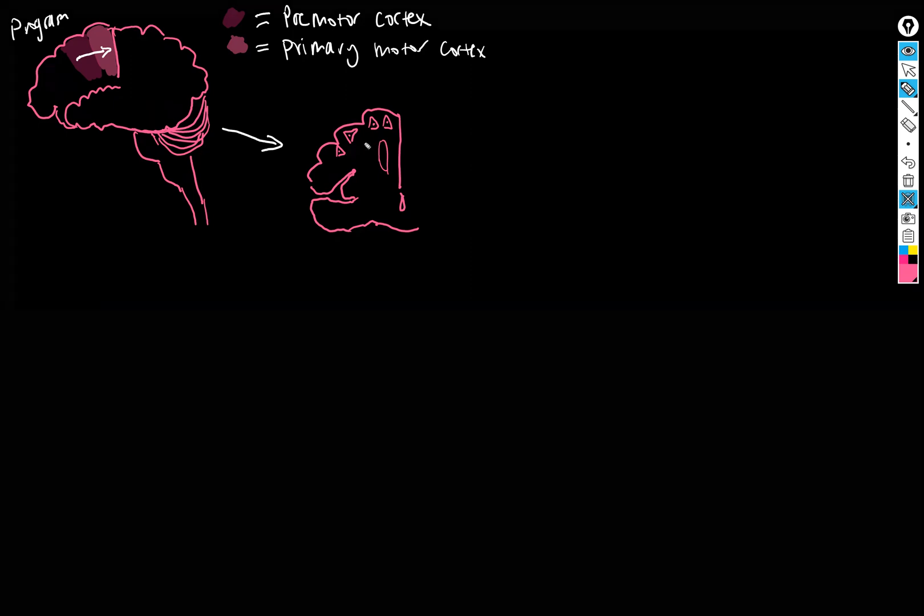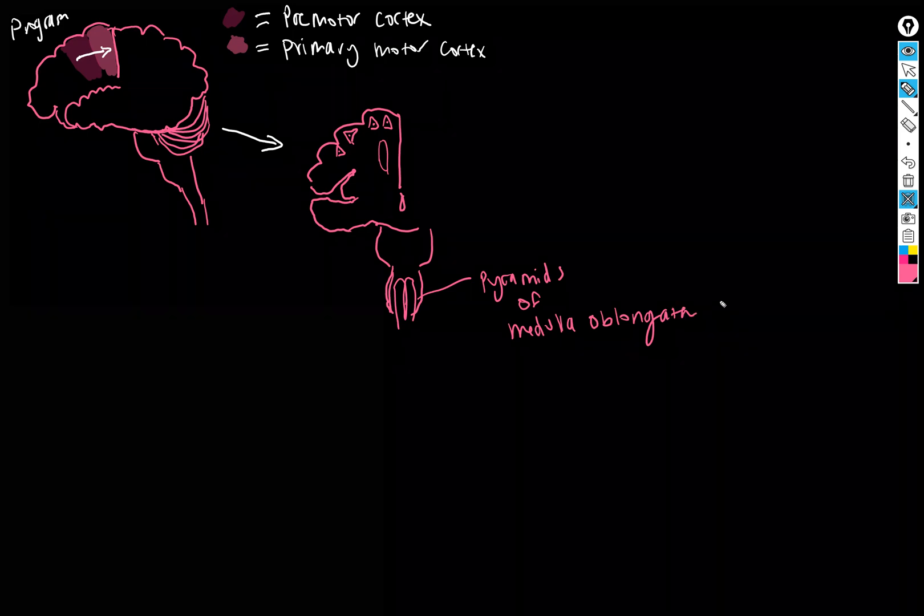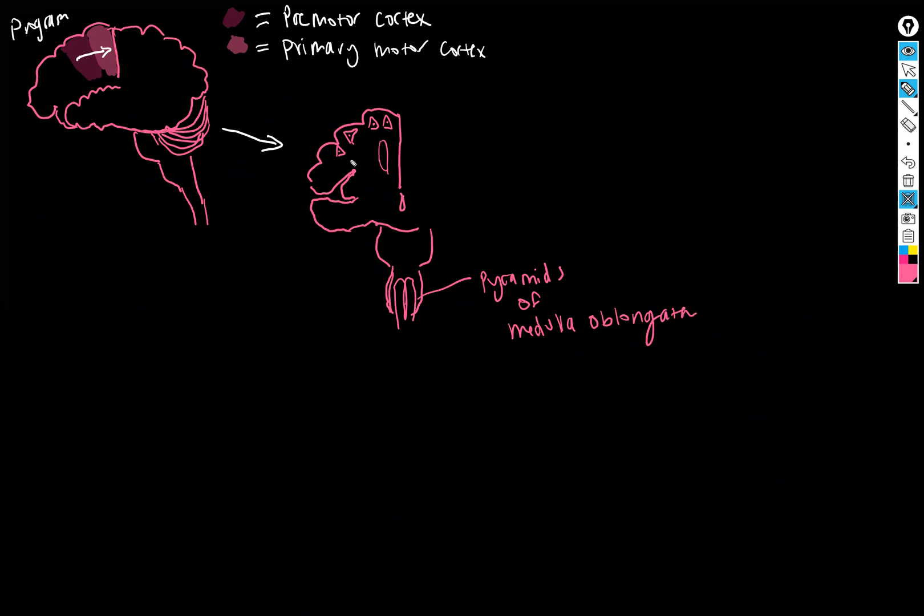So these pyramidal cells - let's draw down here. We've got pons and medulla, and then in the medulla we've got the pyramids on the front. So the upper motor neurons are from the pyramidal cells, so they get excited one after the other in the necessary order to produce a movement.